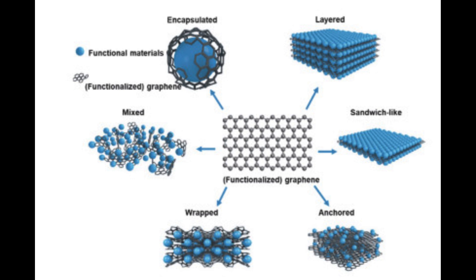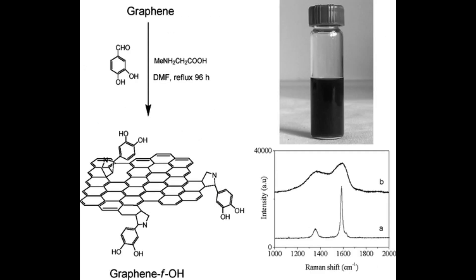Functionalized graphene has a wide range of applications in fields such as electronics, energy storage, composites, sensors, and biotechnology. The choice of functional groups and the specific method of functionalization can be tailored to the desired properties and applications. For example, functionalized graphene can be used to enhance electrical conductivity, improve the mechanical properties of composites, or increase the capacity of supercapacitors.